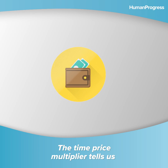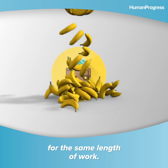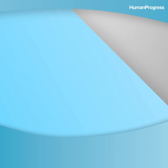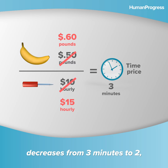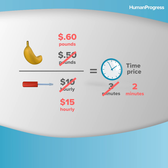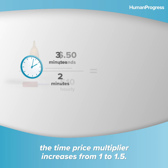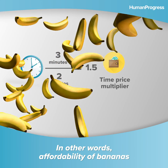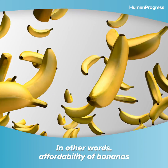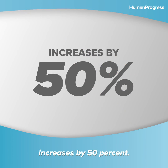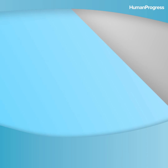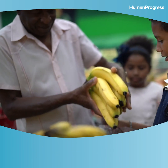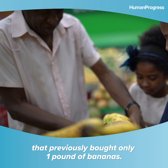The time price multiplier tells us how much of something we can buy for the same length of work. Consider bananas. If the time price of a pound of bananas decreases from three minutes to two, the time price multiplier increases from one to 1.5. In other words, the affordability of bananas increases by 50%. We can now buy one and a half pounds of bananas for the same length of work that previously bought only one pound of bananas.